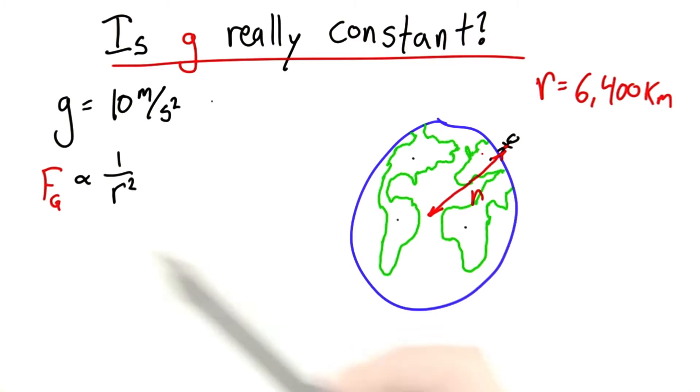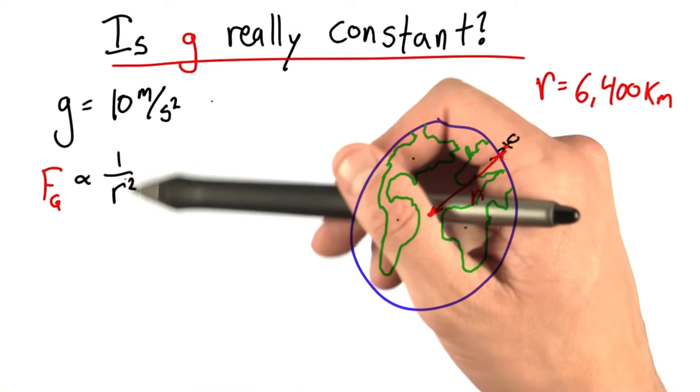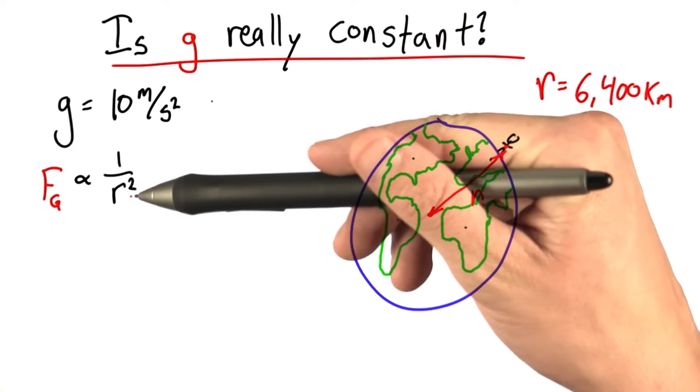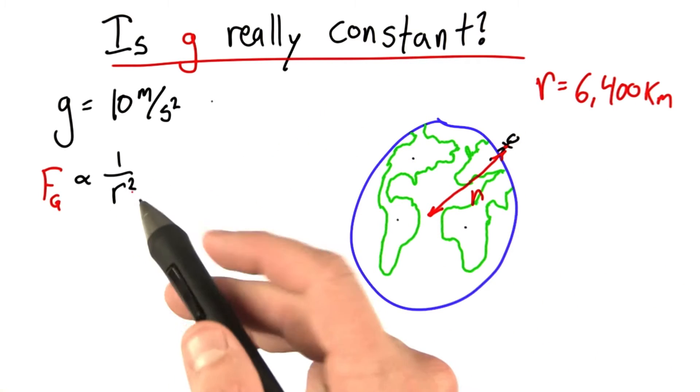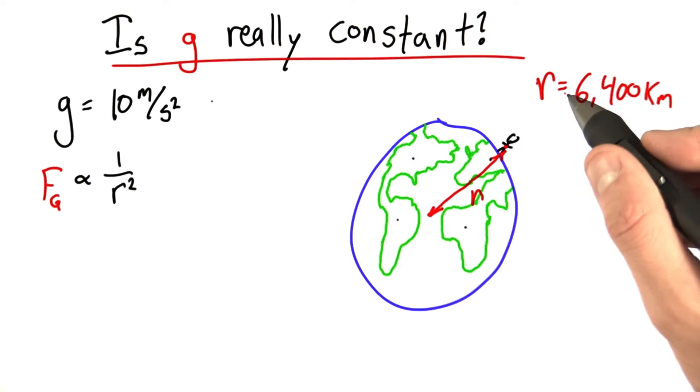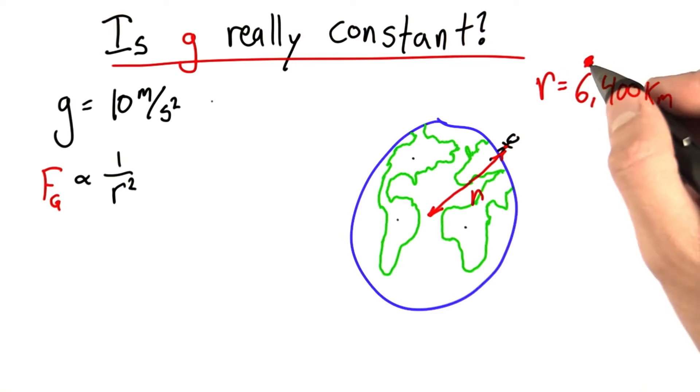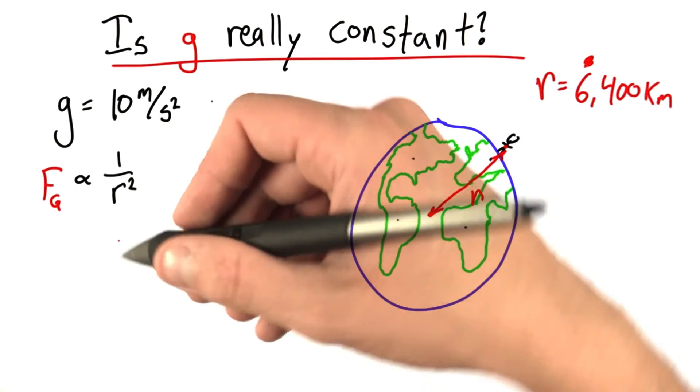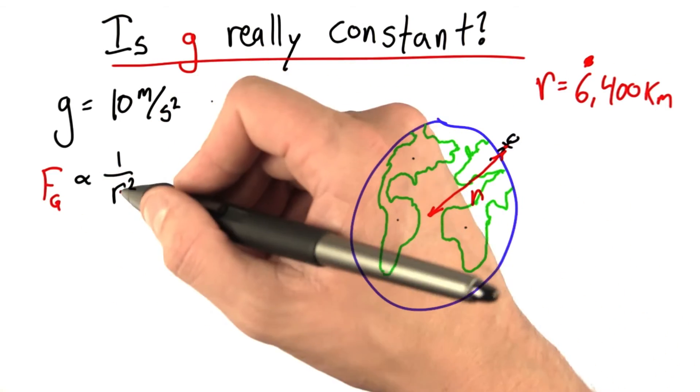Now since the force of gravity has this strange dependence, 1 over r squared, remember this means if I get twice as far away from the earth, so maybe if I were out over here somewhere, the force of gravity would be 1 quarter as strong because 1 quarter is 1 half squared.